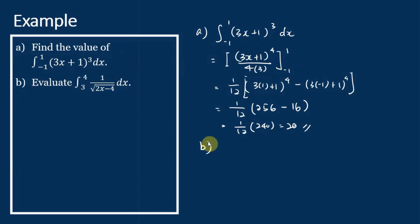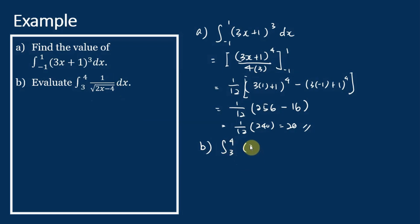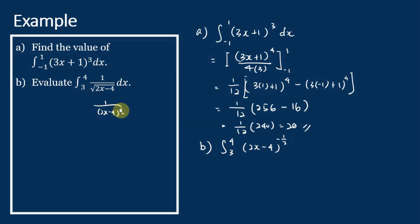Let's move on to question B: evaluate the integration of 1 over the square root of (2x minus 4) from 3 to 4. We rewrite this in index form — 1 over the square root of (2x minus 4) can be written as (2x minus 4) to the power of one half, and therefore as (2x minus 4) to the power of negative one half.